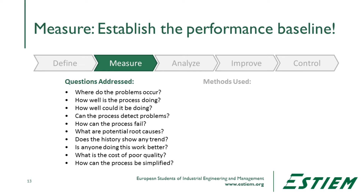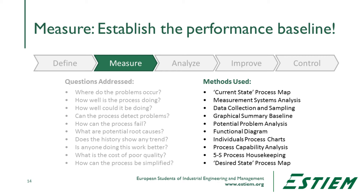We understand where problems occur, how well the process is doing, and how well it could be doing. We look at where defects are produced and how the process can fail — risk and potential failure analysis. We examine root causes or potential root causes and the causal structure of the system. Does history show trends? Is anyone doing steps in the process better in terms of equipment or people? What is the cost of poor quality, and how could the process be simplified? Tools include process mapping, measurement systems, and data collection. A graphical summary helps understand the distribution of the process over time, and we also look at time-series individual charts — an enumerative view summarizing everything we know, and the historical view showing how the process physically changed over time.